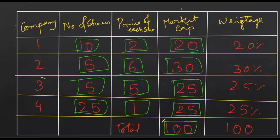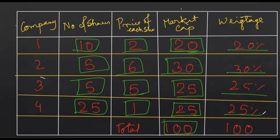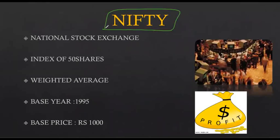Now, out of the total Rs 100, Company 1's share is Rs 20 — this ratio is known as the weightage. Similarly, the weightage of each company is calculated based on their market capitalization. This is how the Sensex is calculated for the top 30 companies. If the same concept is applied for 50 companies, then that index will be known as the Nifty 50.